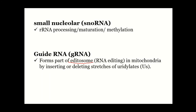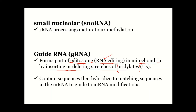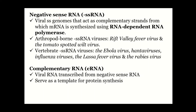Guide RNA forms part of the editosome, or RNA editing tools, in mitochondria. DNA in mitochondria forms an mRNA, and the guide RNA helps in inserting or deleting stretches of uridylates. The guide RNA contains sequences that hybridize to matching sequences of the mRNA so that any required modification — insertion or deletion — can be carried out. They are guiding RNA editing in mitochondria.